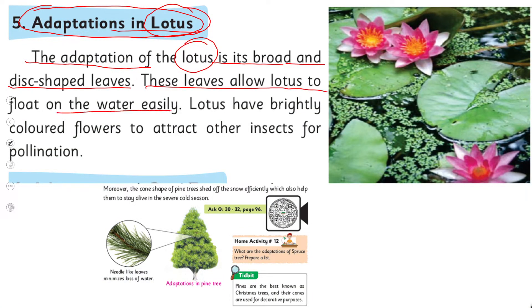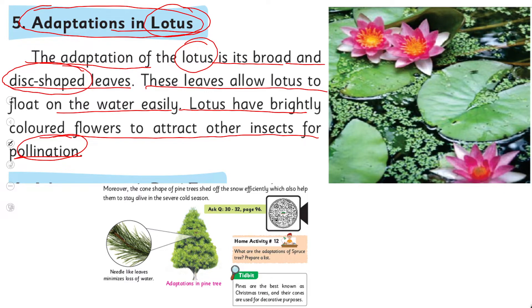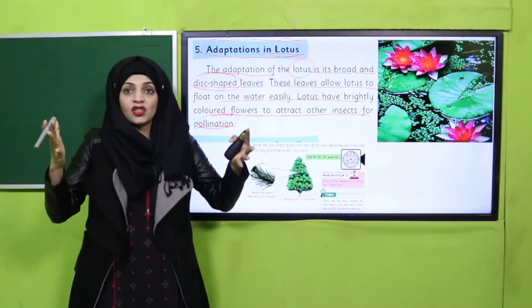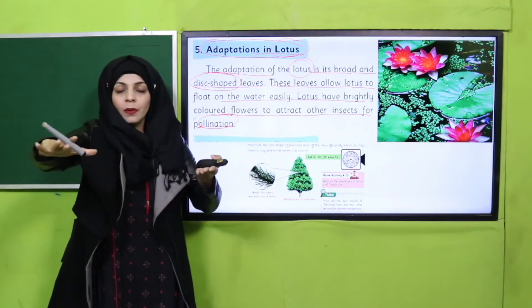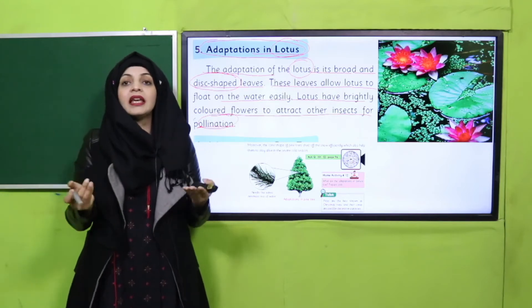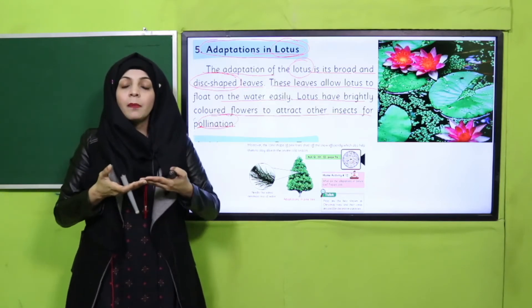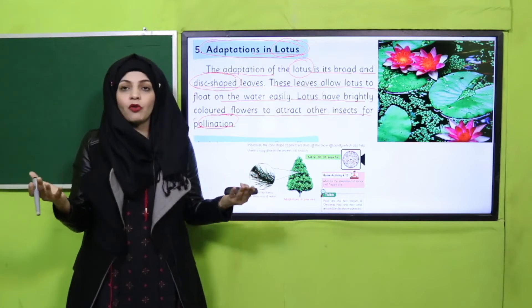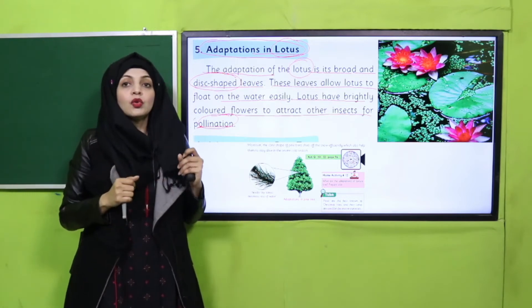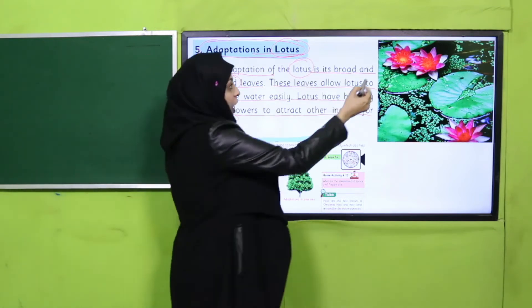The adaptation of the lotus is its broad and disc-shaped leaves. These leaves allow the lotus to float on the water easily. The first adaptation is that the leaves of water lily and lotus are very large, disc-shaped and flat, which helps them float on the water. The second adaptation: lotus has brightly colored flowers to attract insects for pollination.